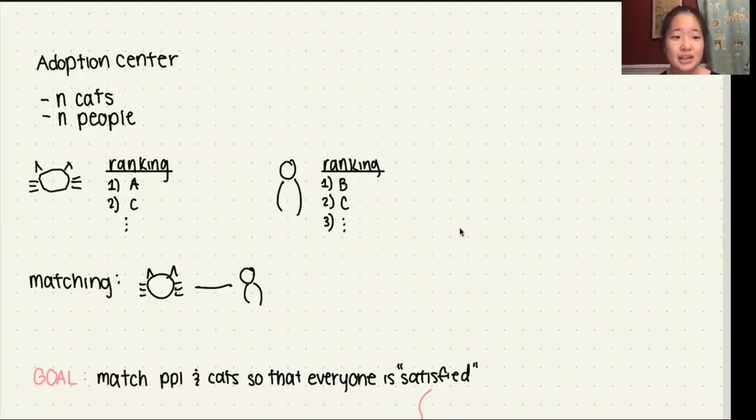Let's say you have an adoption center with n cats and n people, and the cats have a ranking of their most favorite to least favorite person, and the people also have a ranking of their most favorite to least favorite cats. A matching is between a cat and a person, meaning the person has adopted the cat. Our goal is to match people and cats so that everyone is satisfied.